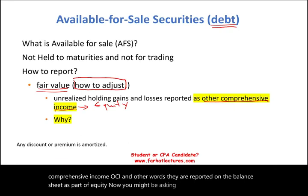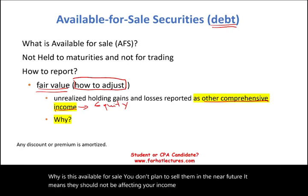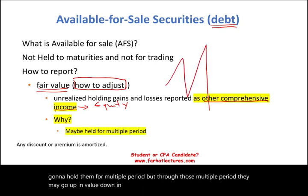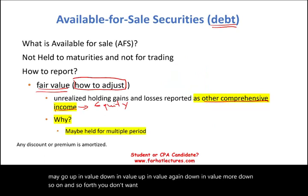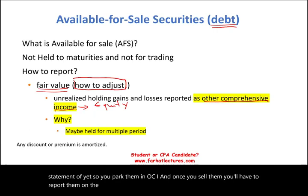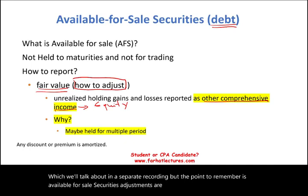You might ask why. Available for sale securities — you don't plan to sell them in the near future, so they should not be affecting your income. You're going to hold them for multiple periods, and through those periods they may go up in value, down, up again, down — so on and so forth. You don't want those fluctuations to affect your income statement as of yet, so you park them in OCI. Once you sell them, you report them on the income statement and make a reclassification, which we'll cover in a separate recording.